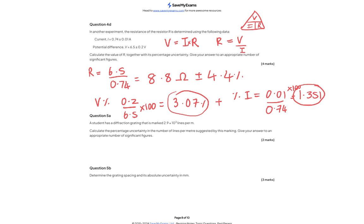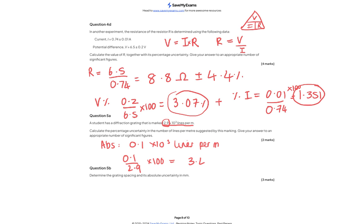Question 5a: a diffraction grating is marked as 2.9 × 10³ lines per metre. The absolute uncertainty is ±0.1 × 10³ lines per metre, suggested by the precision of the stated value. The percentage uncertainty is 0.1/2.9 × 100 = 3.4%.